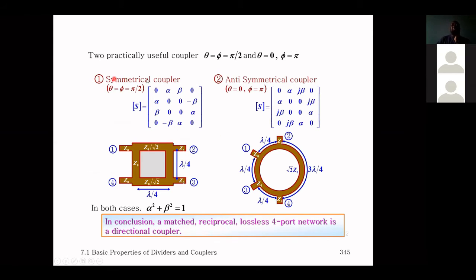For the symmetric coupler (θ = φ = π/2), input at port one is distributed to ports two and three. The physical construction has all ports matched to Z0, with arms of Z0/√2 and Z0/√2, and each arm is lambda/4 in length. Alpha squared plus beta squared equals one.